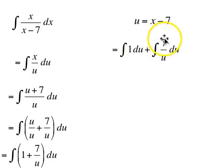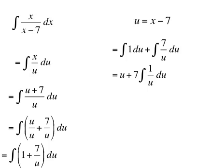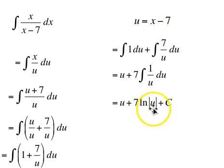The 7 over u is 7 times 1 over u, so we can pull the 7 out and take 7 times the antiderivative of 1 over u du. The antiderivative of 1 over u is the natural log of the absolute value of u. Since u is x minus 7, we replace u, giving us the expression in terms of x.